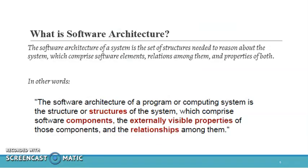Basically, software architecture is a combination of different structures. Structures are the components which are related to each other and they work together. The software architecture is the highest level of the system. If you see the software architecture, you will be able to know the highest level of the system and how the system is constructed. You can get the idea of the first-eye view of the system.